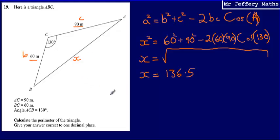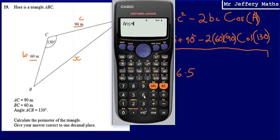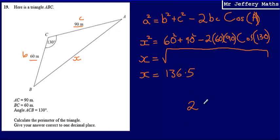And so what I can now do to work out the perimeter of the triangle, I can just add these lengths together. So 136.5 plus 60 plus 90, and that is going to give me a perimeter of 286.5 meters. So final answer, 286.5.